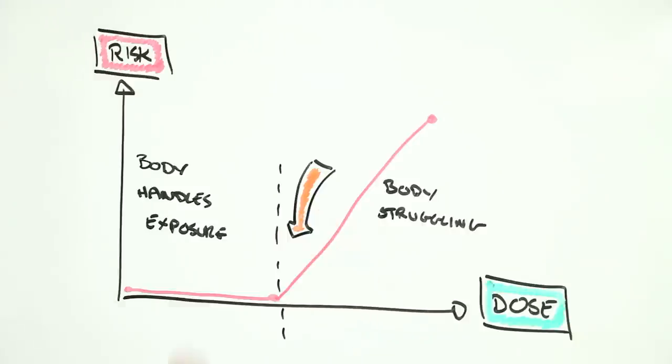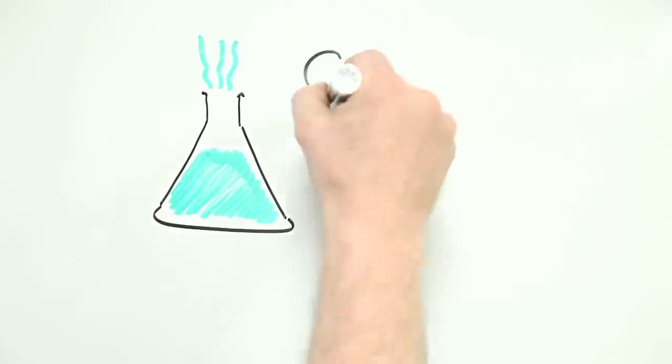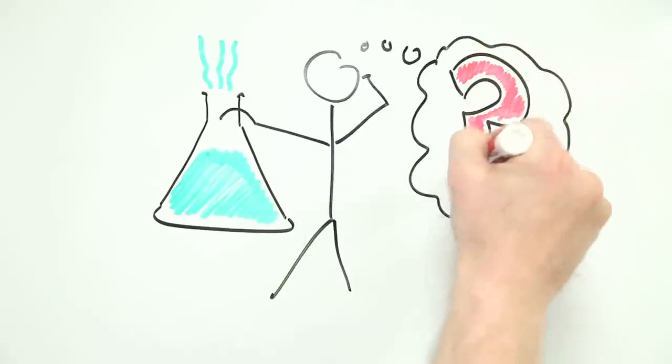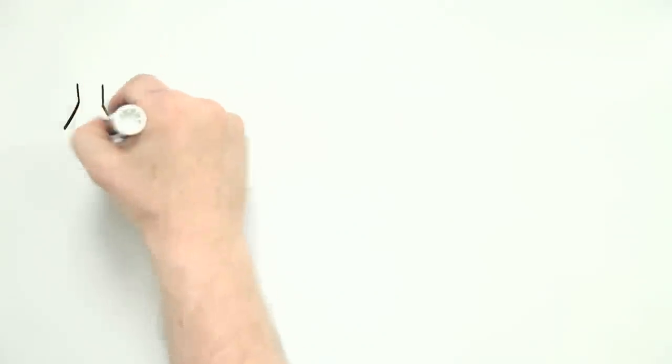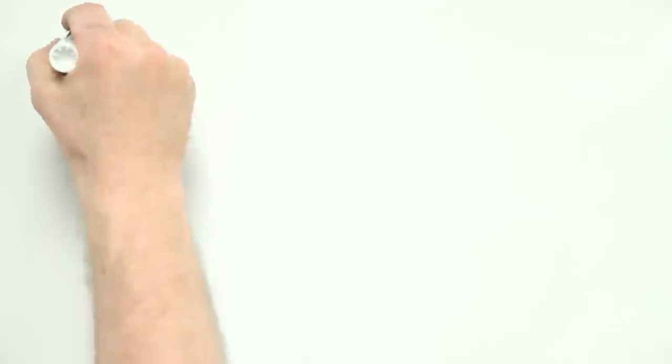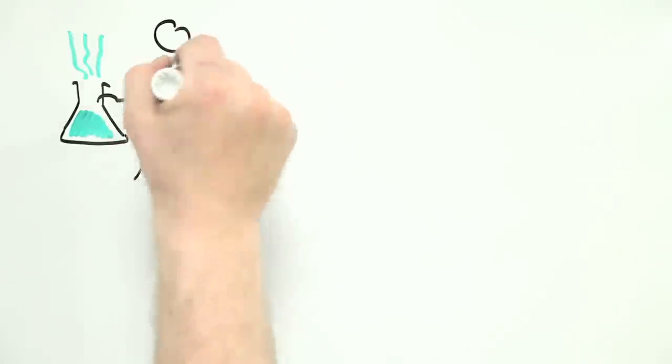According to the threshold model, if exposure is kept well below a certain level, risk is minimal. But what if you're exposed to something that causes irreparable damage? It used to be thought that this was the case with substances that cause cancer. Here's how the thinking goes.